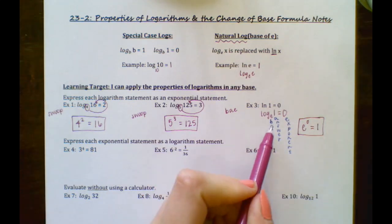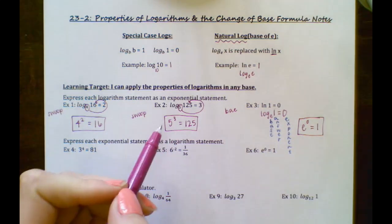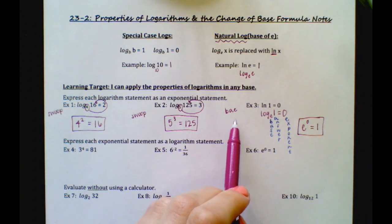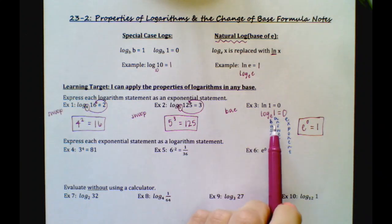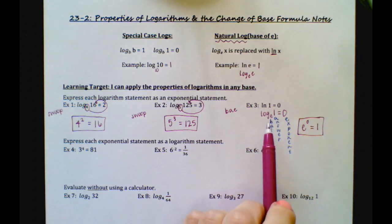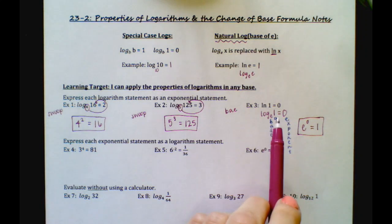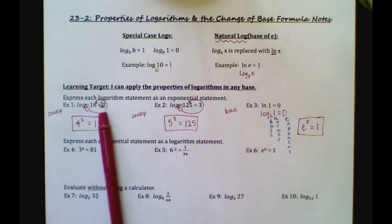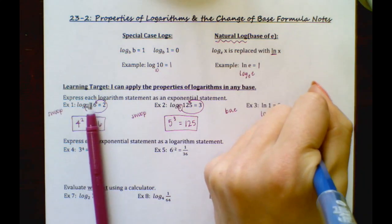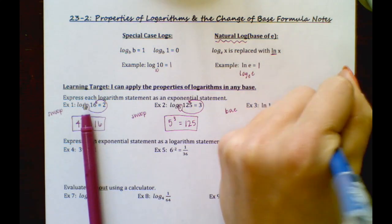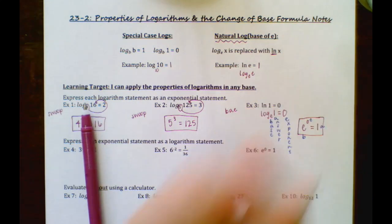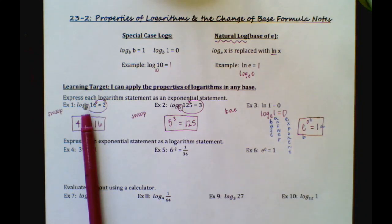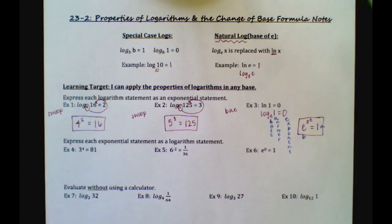If you get confused with the swoop method, try the BAY method. All you have to do is, in logarithmic form, spell BAY, label your B, A, and E, and rewrite them in exponential form: your base, your exponent, and equal to your answer.